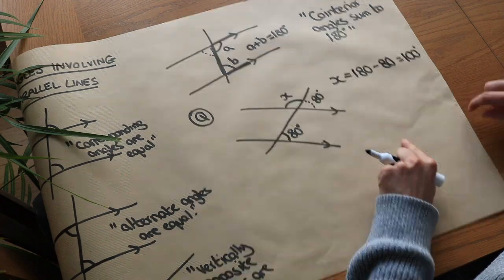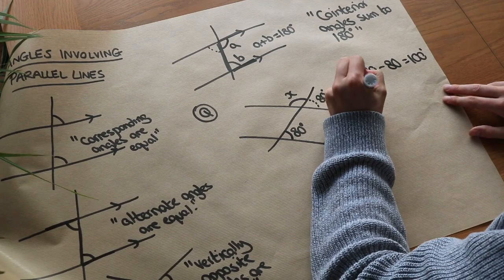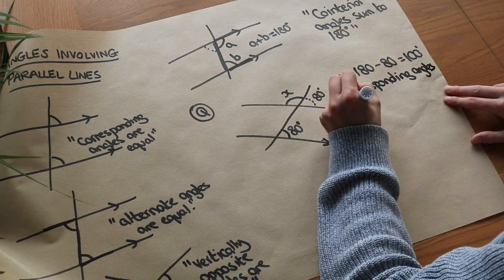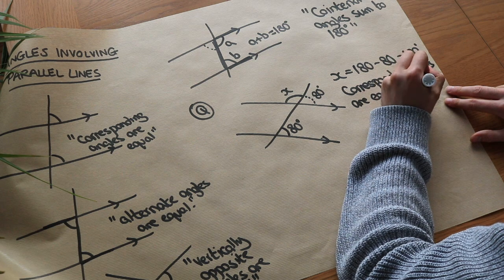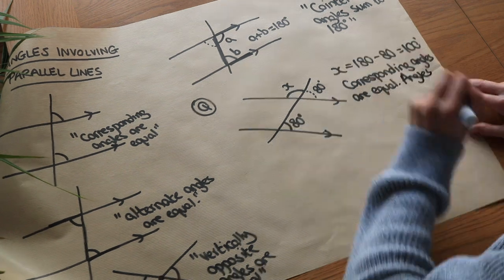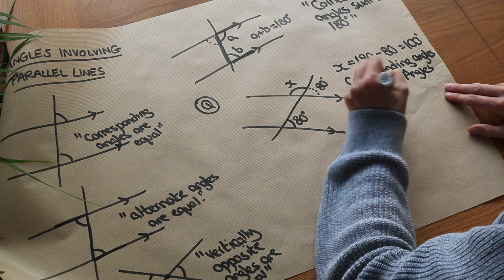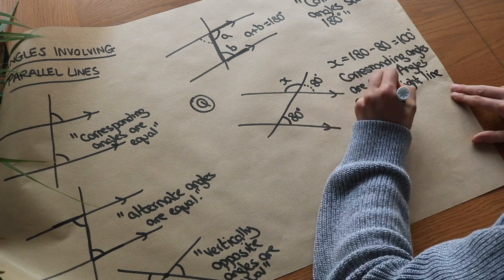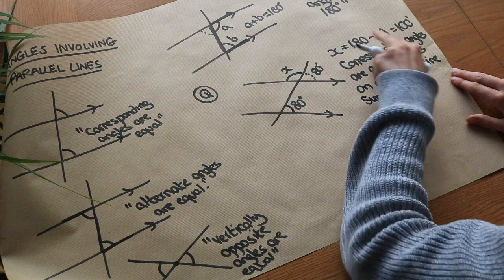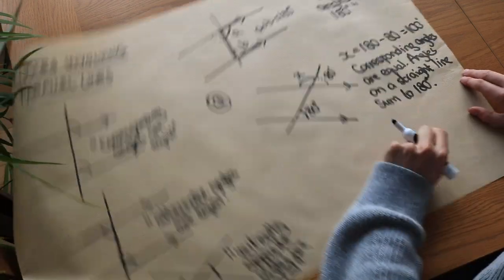If asked to give reasons, we quote: corresponding angles are equal, and angles on a straight line sum to 180 degrees. Note — we say angles on a straight line sum to 180 degrees, not that they 'are' 180. That is sufficient reasoning for how we found X.